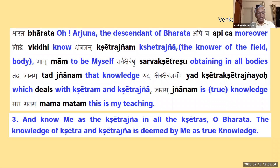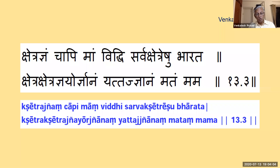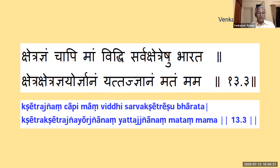This is Jivatma Paramatma Aikyam. Take the example of a wave and ocean. If water is looked upon as a small name and form, it is a wave. The same water when looked upon as the total name and form, it is ocean. When you remove both wave and ocean, only one water remains. This is Atma Ekatma Danam. Now let's look at the verse proper. Shloka 3 gains great significance because Krishna is revealing this Jivatma Paramatma Aikyam, and hence this shloka gets the status of Mahavakyam — called Jivatma Paramatma Aikyam Bodhaka Vakyam.